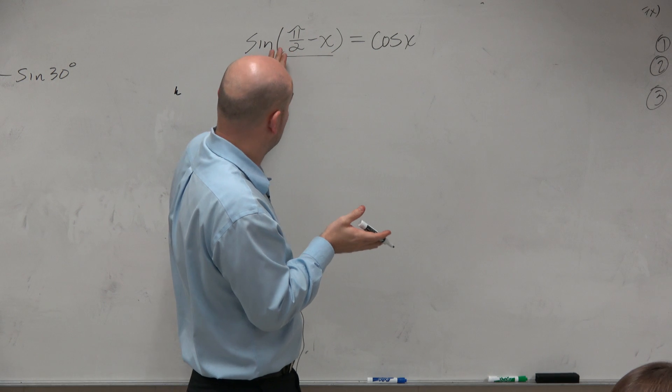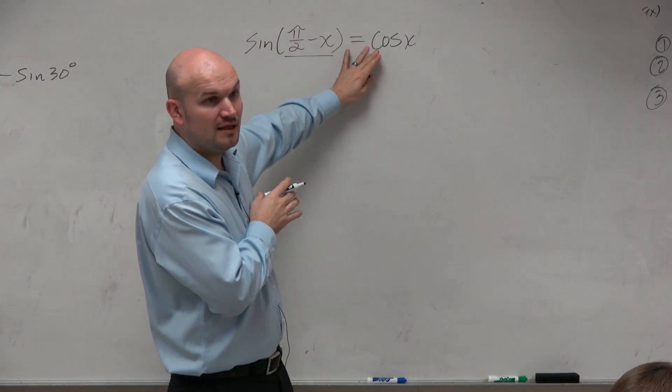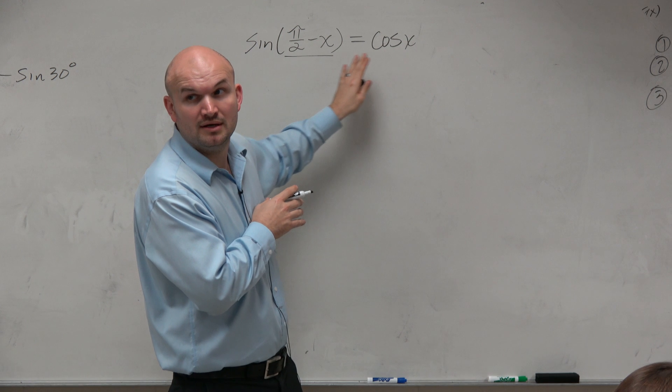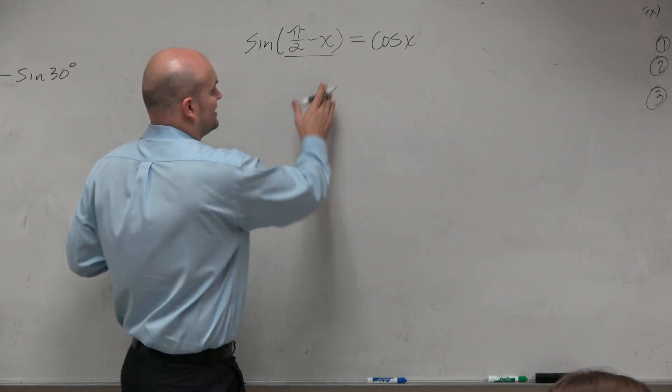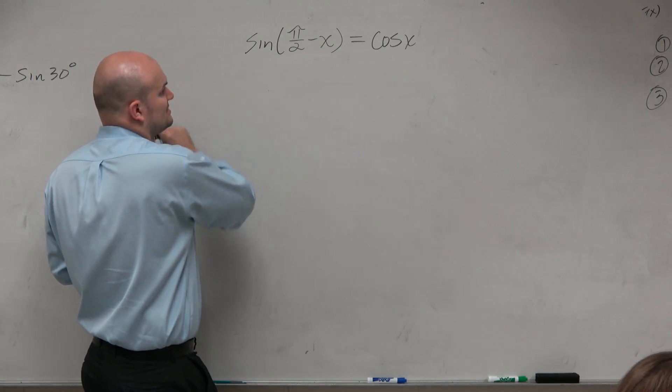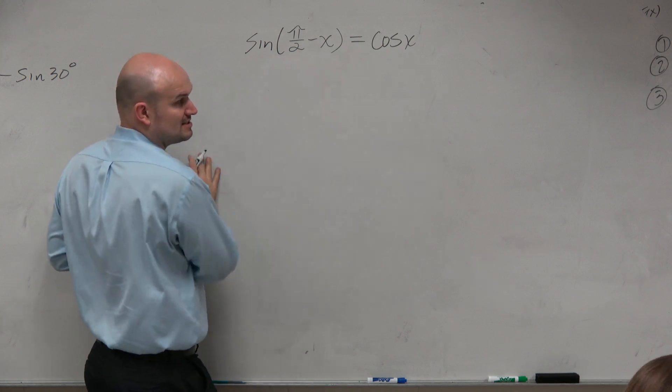Now, not always, because as I said, for a lot of the problems we did here, we could use the co-function identity. So sometimes you want to look for the co-function identity. But what I'm going to do is use the sum and difference identities to show that the left side is the same as the right side.